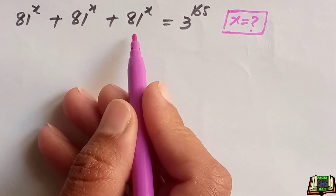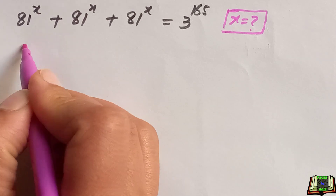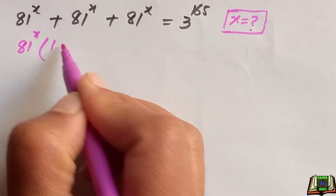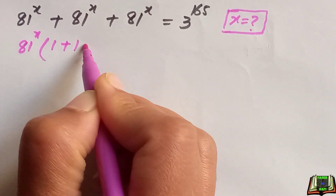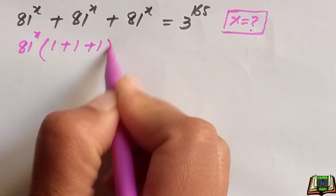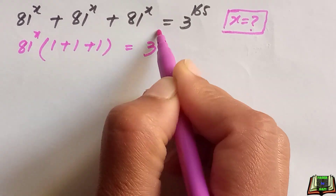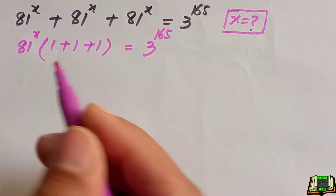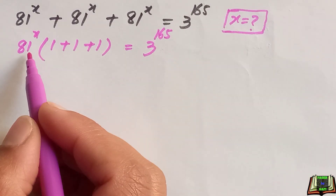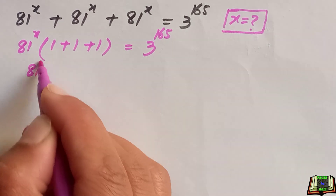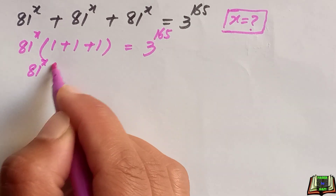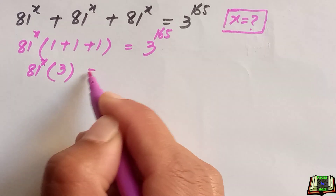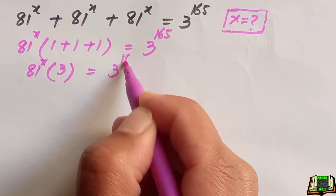From the left-hand side we can factor out 81 to the power x, and inside the bracket we have 1 plus 1 plus 1, which equals 3, so the right-hand side remains 3 raised to the power 165.